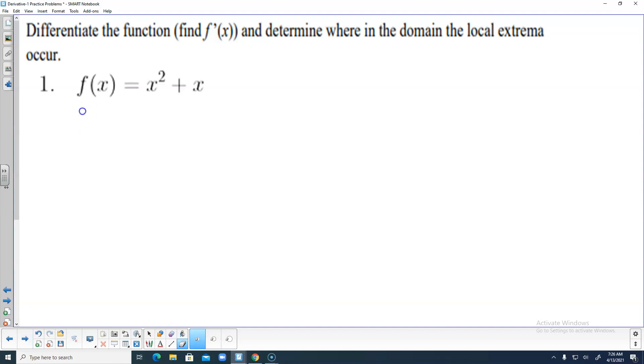f prime of x. Using the power rule, bring the two down. This is two times x to the first power. Then bring the one down. One times one is positive one, times x to the zero power. And x to the zero is essentially one. There's the derivative.